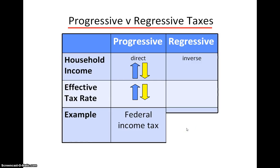In a regressive tax, income and the effective tax rate are inversely related. In other words, people with relatively low incomes pay a higher percentage of their incomes in taxes than people with relatively high incomes.